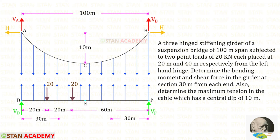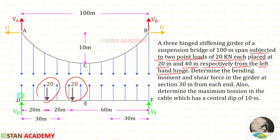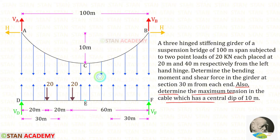Hello everyone. Today we are going to do a problem based on suspension cables. Let us read the question and draw the diagram. A three-hinged stiffening girder of a suspension bridge of 100 meter span is subjected to two point loads of 20 kilo newton each, placed at 20 meter and 40 meter respectively from the left hand hinge. Determine the bending moment and shear force in the girder at a section 30 meter from each end. Also determine the maximum tension in the cable which has a central dip of 10 meter.